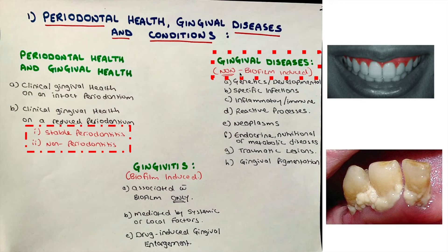The second subheading is gingival diseases non-biofilm induced — the one where plaque is not the cause. This includes genetics or developmental causes, specific infections (some bacterial infections can cause gingival diseases), inflammatory or immune responses, reactive processes to chemicals or stimuli, neoplasms, endocrine or nutritional or metabolic diseases, and traumatic lesions or gingival pigmentations.